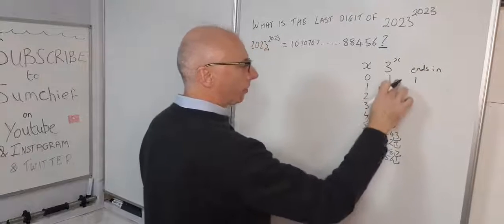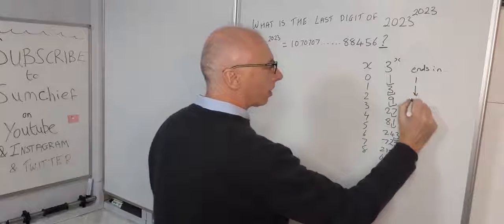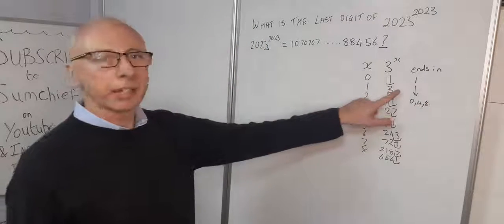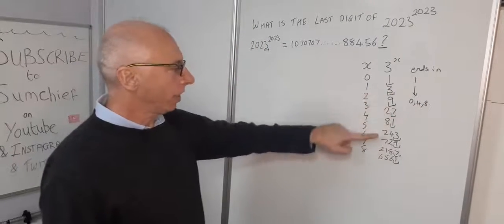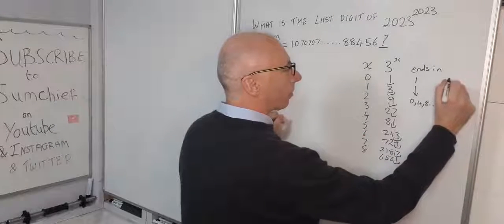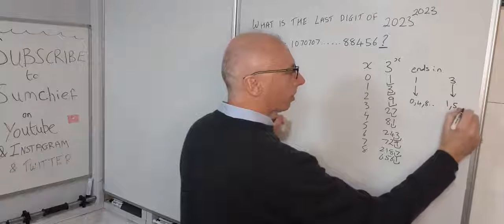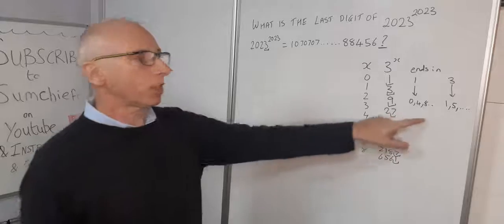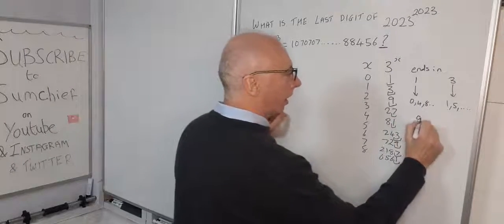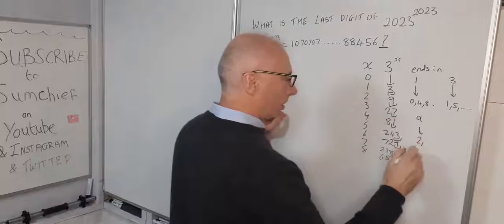We've got 0, 4, and 8, so that gives us 0, 4, and 8. Ending in 3, we'll have 1 and 5, and so on - it's increasing by 4 each time. Ending in 9, that will give us 2, 6, and so on.